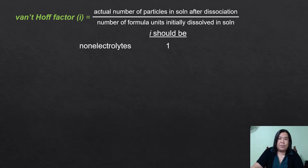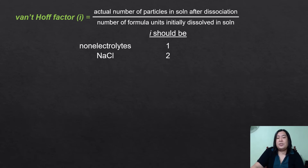That is why i is not written in the mathematical equation for non-electrolyte solutions. In sodium chloride, the Van't Hoff factor i should be 2. And for calcium chloride, the value is 3.